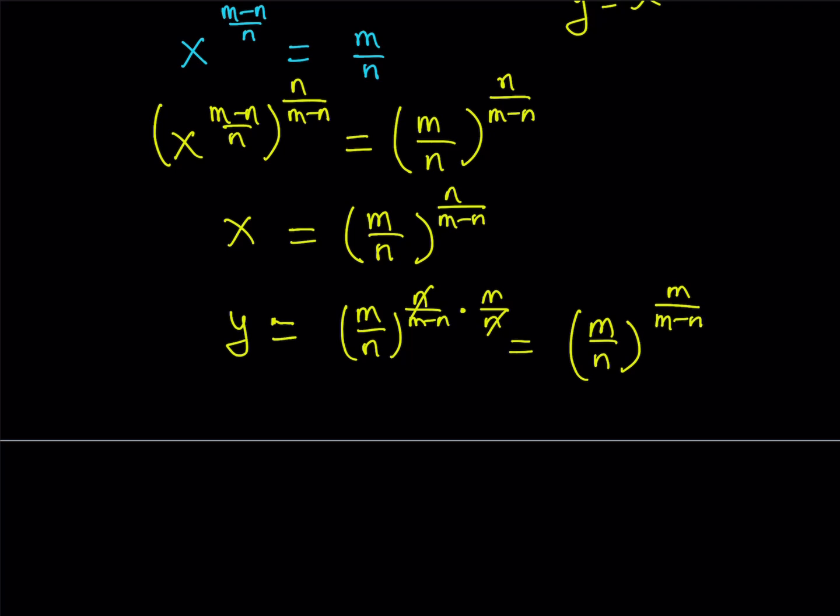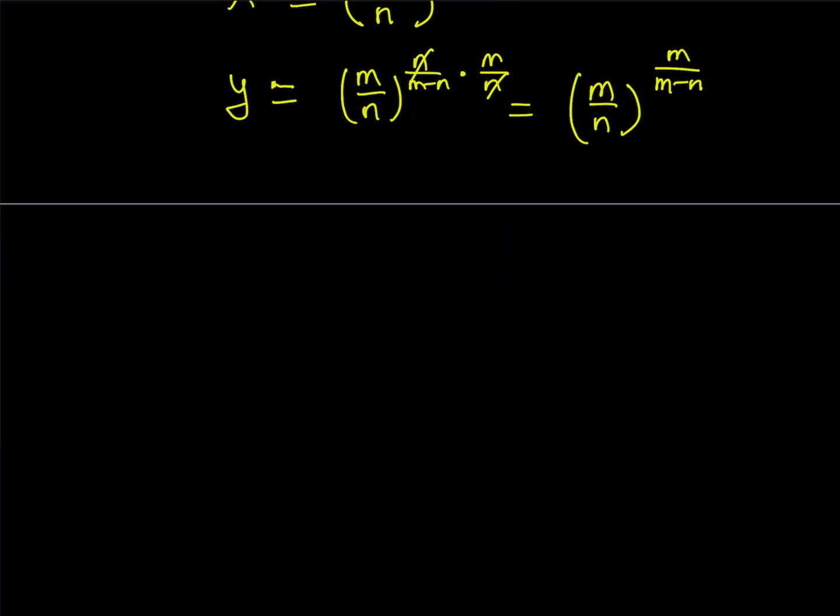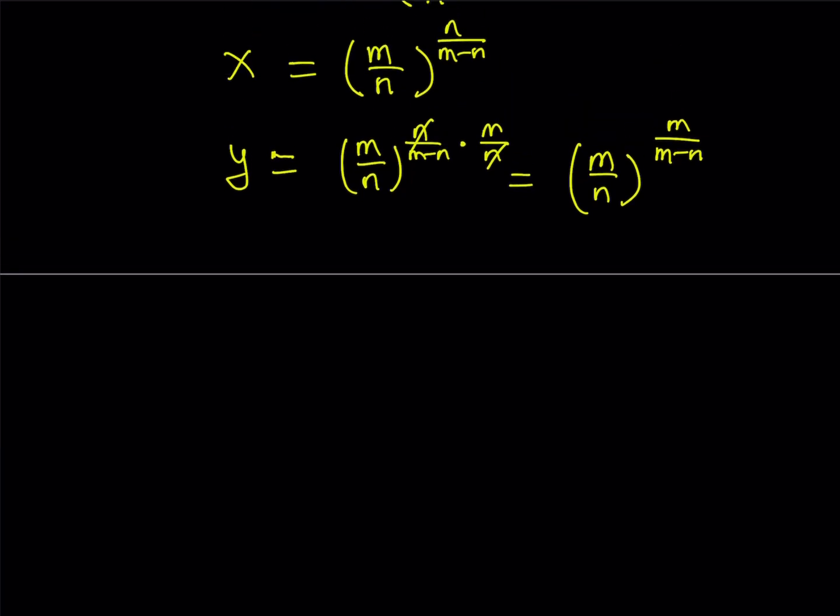So that's going to be our solutions, basically. If you want to rewrite it in a nicer form, well, again, there's no really nicer form. But you can just repeat that. So x is going to equal m over n to the power n over m minus n.